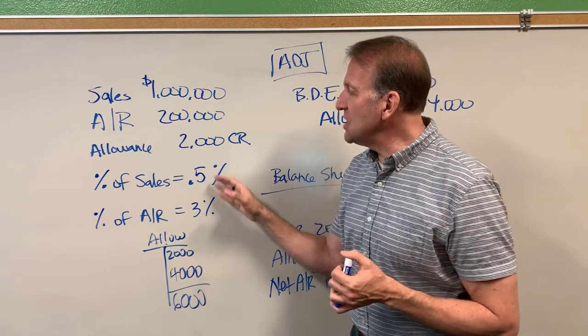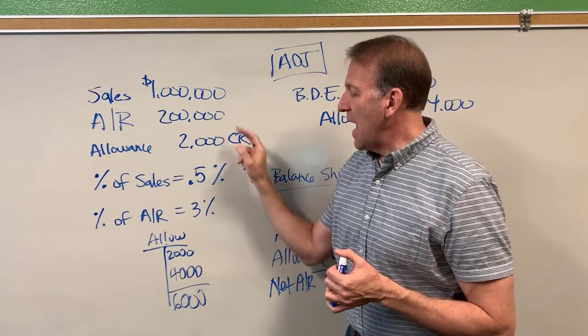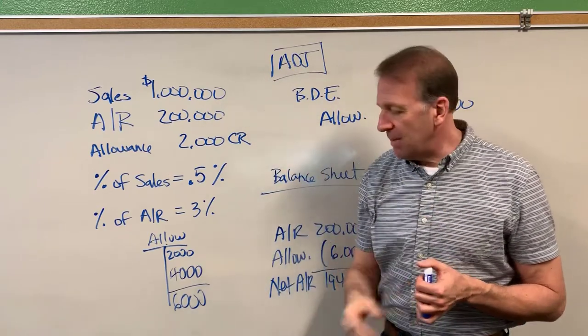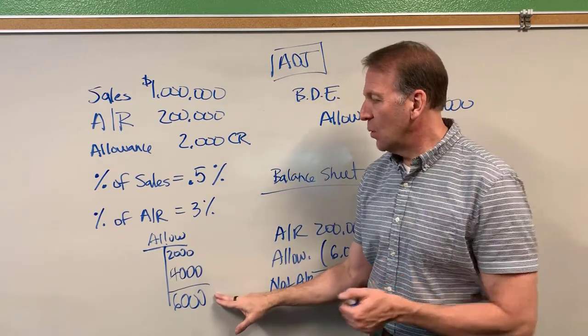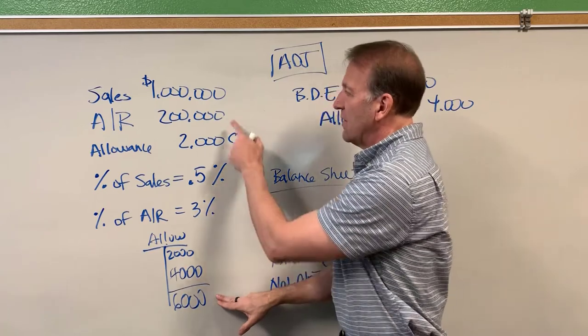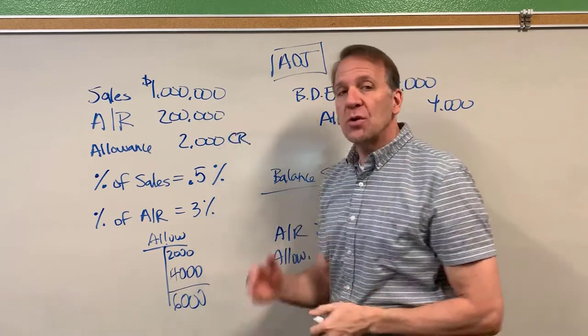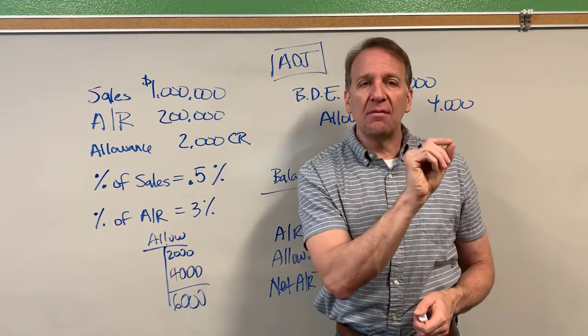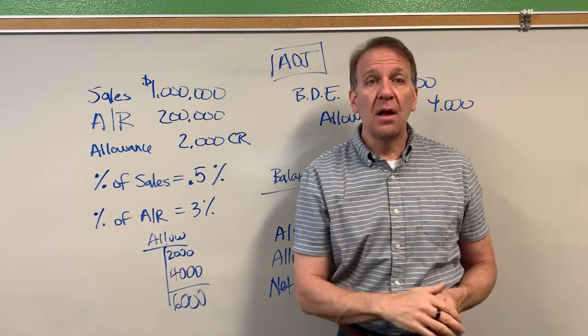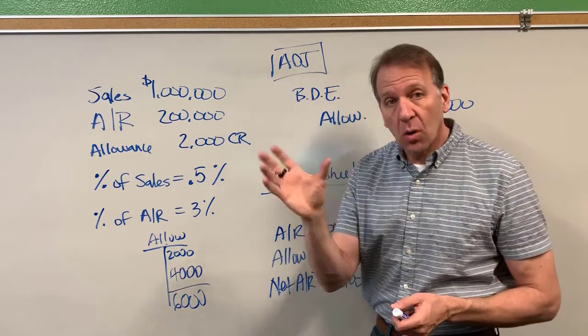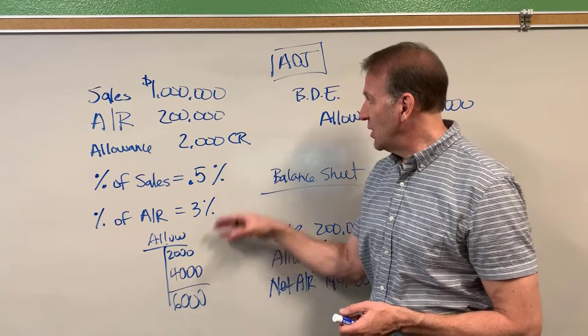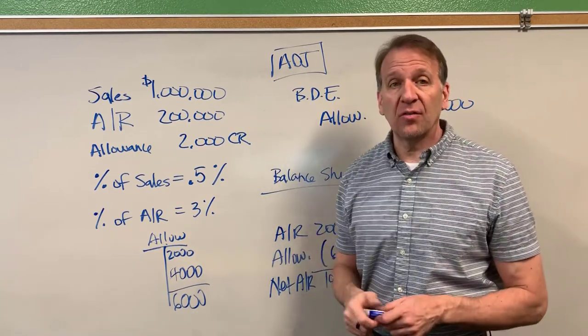So they're aging the accounts receivable and when they multiply them all out by those percentages they add those up and then that would be their ending balance. So we did it in just one step, three percent of the whole two hundred thousand, or you could age your accounts receivable and multiply each one of those aging totals by the percentage given. And then that total would then be your ending balance here and then you'd back into your adjustment and you'd follow the same process from there.